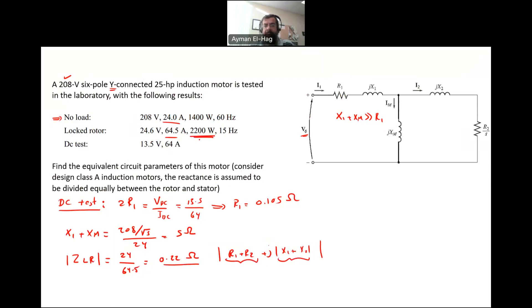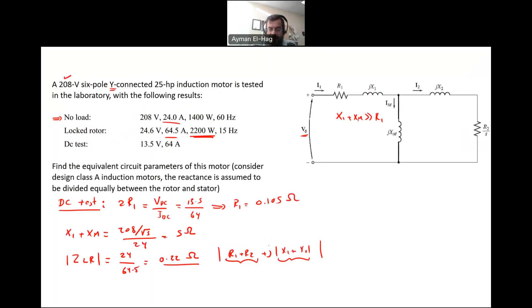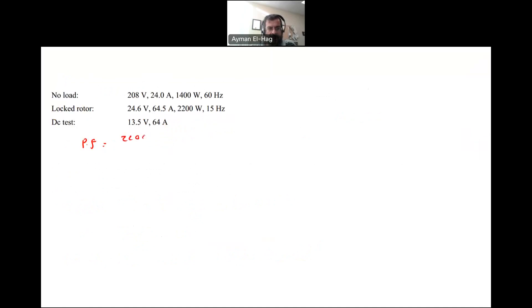We'll use the power, and from that we'll get the power factor. The power factor equals our power, the total power 2200 divided by root 3, the V line-to-line which is 24.6, times the current which is 64.5.